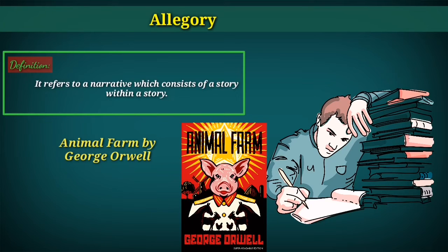We have another example: Animal Farm by George Orwell, which is also an allegory. It tells us a story of a group of animals who rebel against their human farmer, hoping to create a society where animals can be equal, free, and happy. When we read it, we find animals talking and communicating, but it actually represents the events and people of the Russian Revolution. On the surface we are reading about animals, but the deep hidden message is about the Russian Revolution — that is why it is allegory.